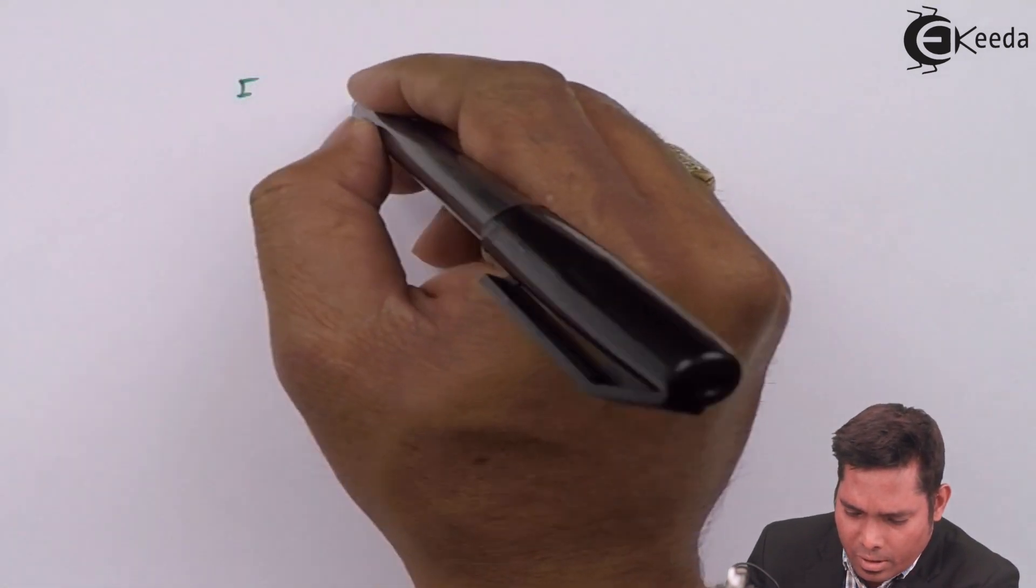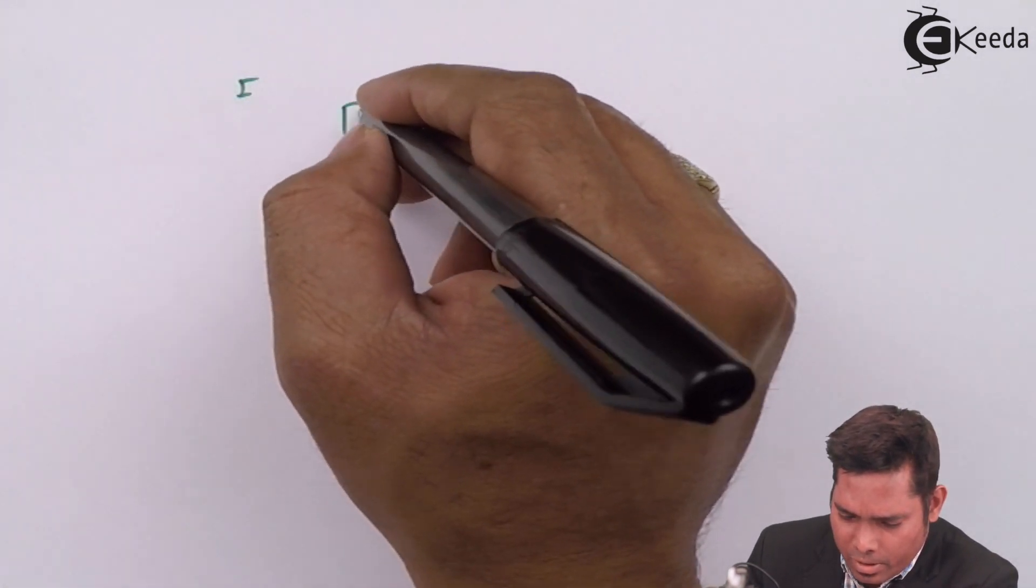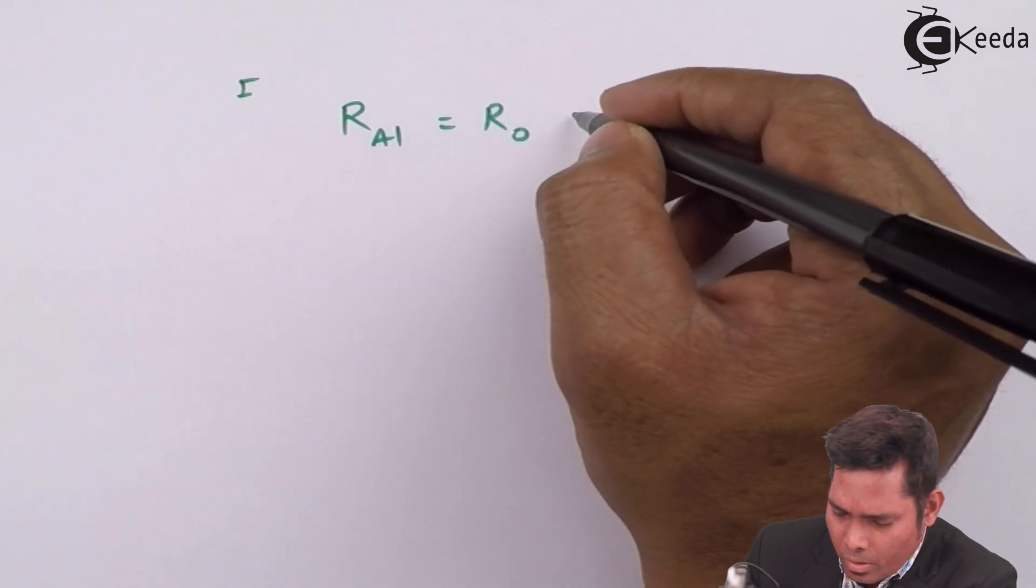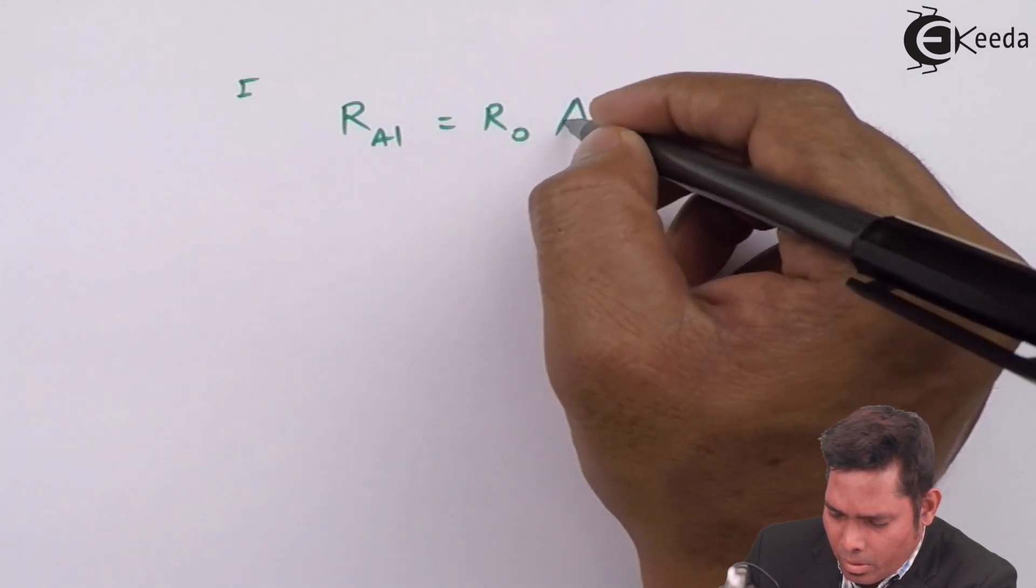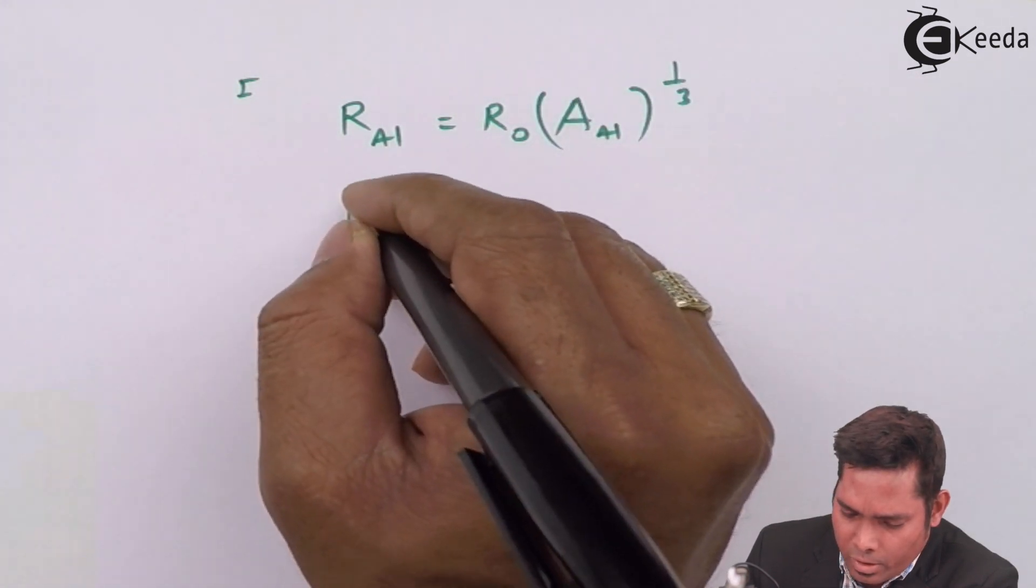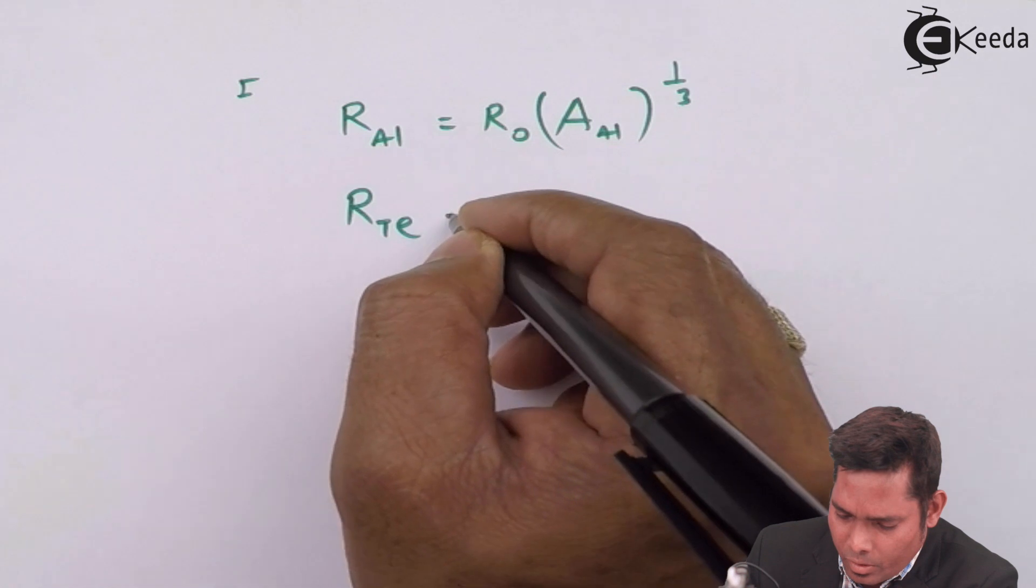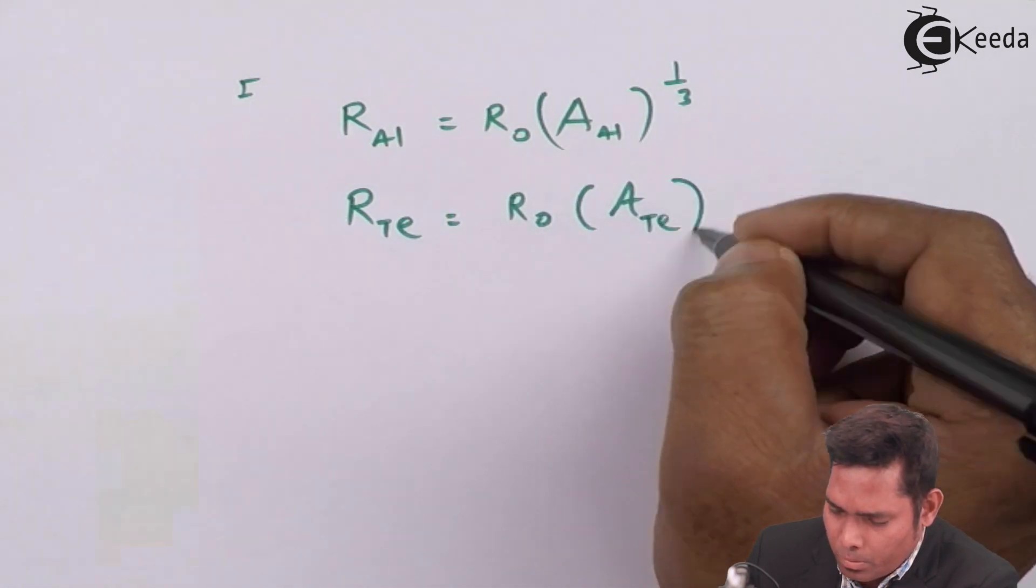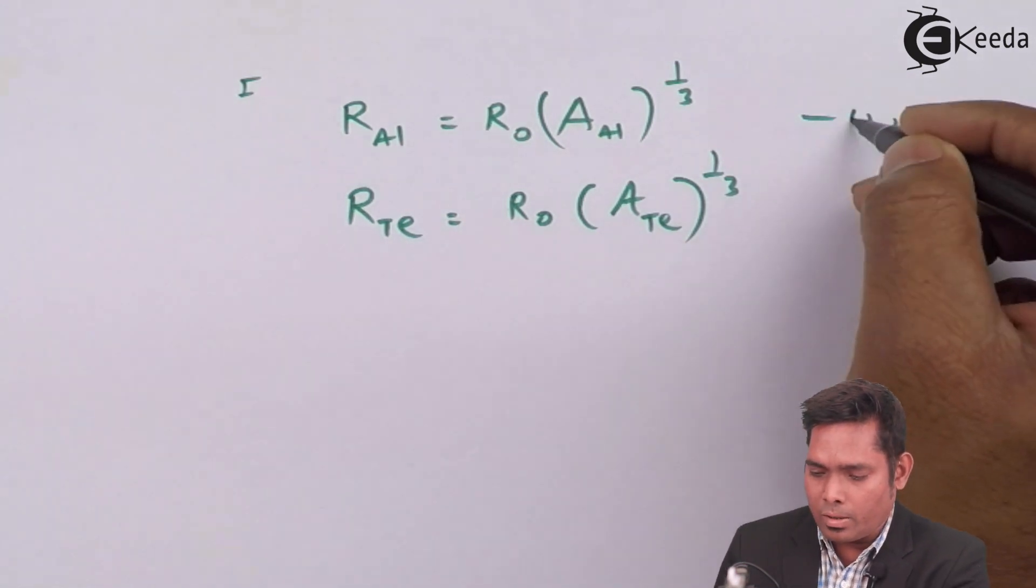For the first case, when you have the aluminum nucleus, the radius of aluminum nucleus equals R₀ times the mass number of aluminum to the power one third. If I talk about Te, the radius of that is R₀, mass number of Te to the power one third. This is one and this is two.